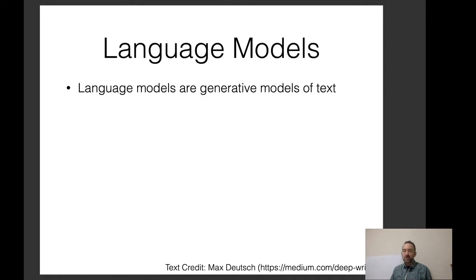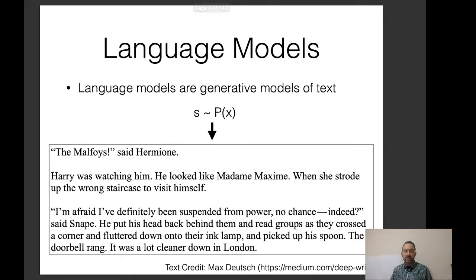Language models are generative models of text, which means that they can create text. We essentially use them to model a probability distribution over plausible sentences, documents, or whatever in a particular language. We can randomly sample some output and get text like 'the Malfoys said Hermione, Harry was watching him, he looked like Madame Maxime' — a language model trained on Harry Potter books.